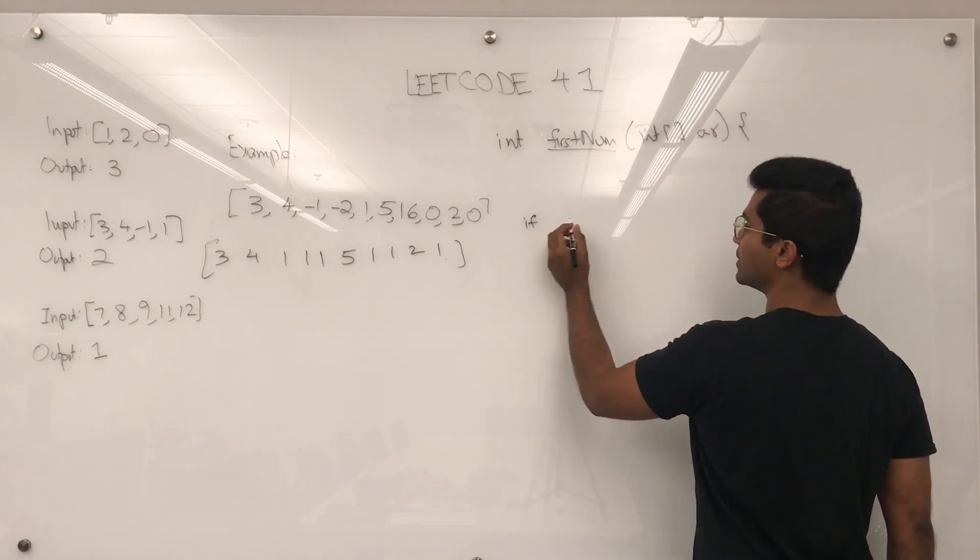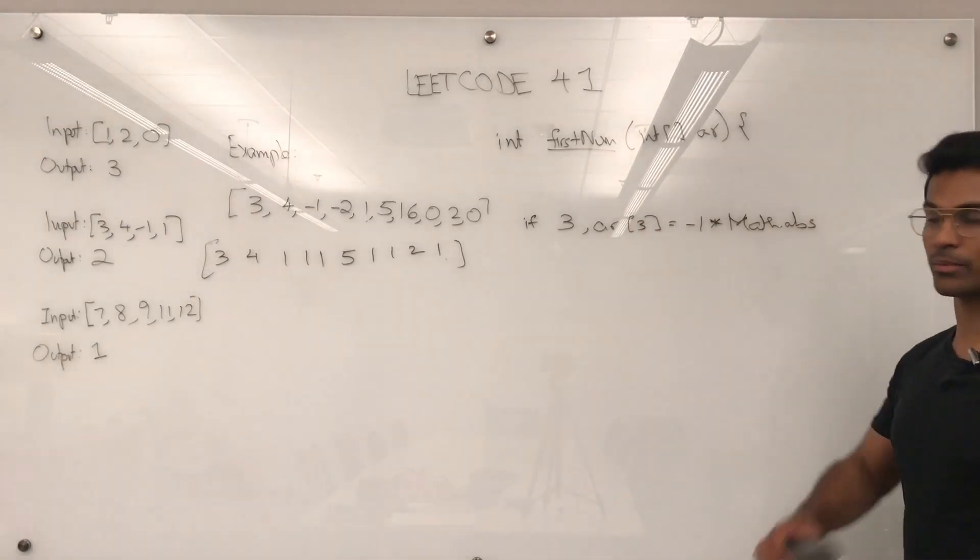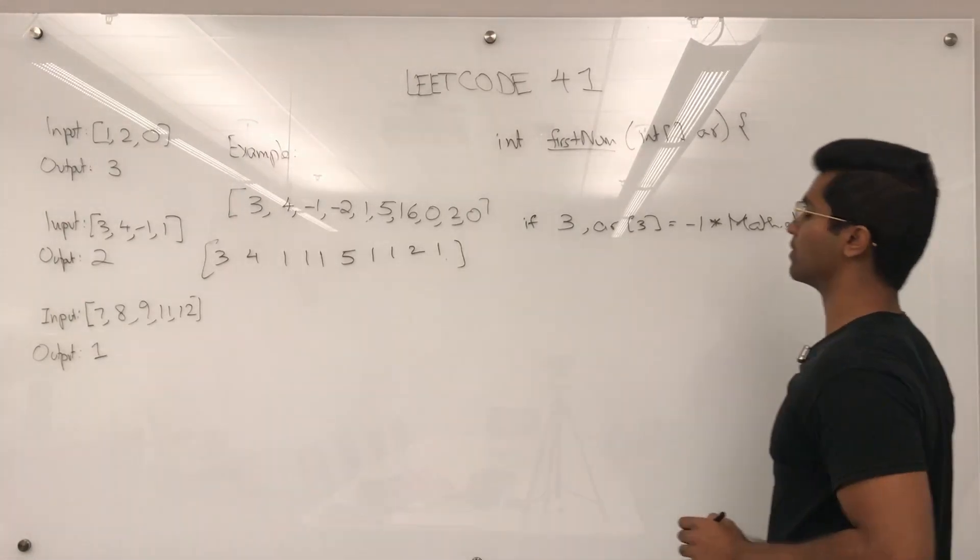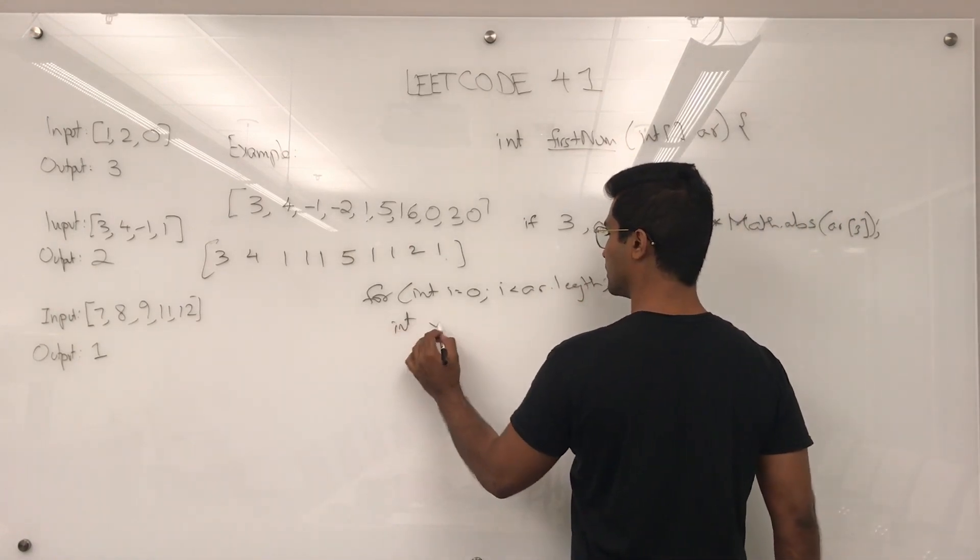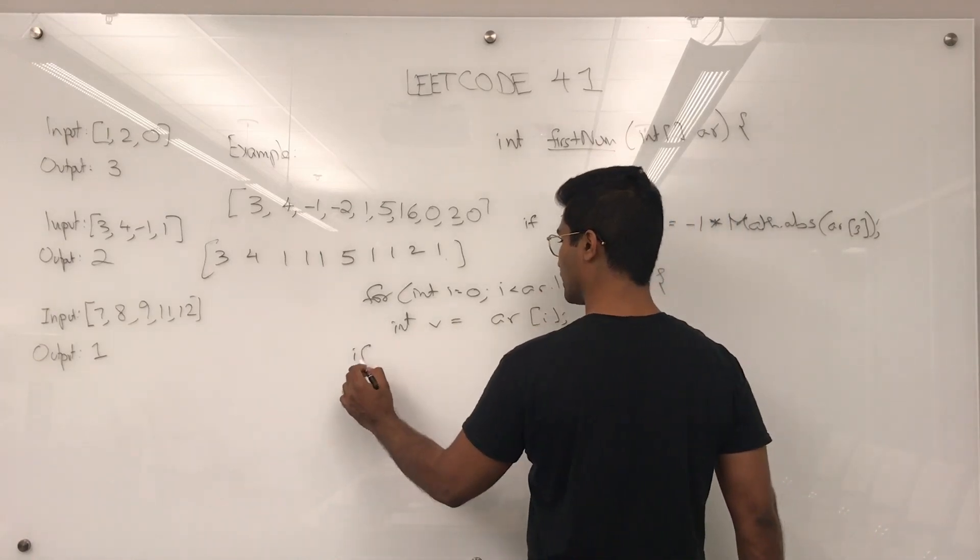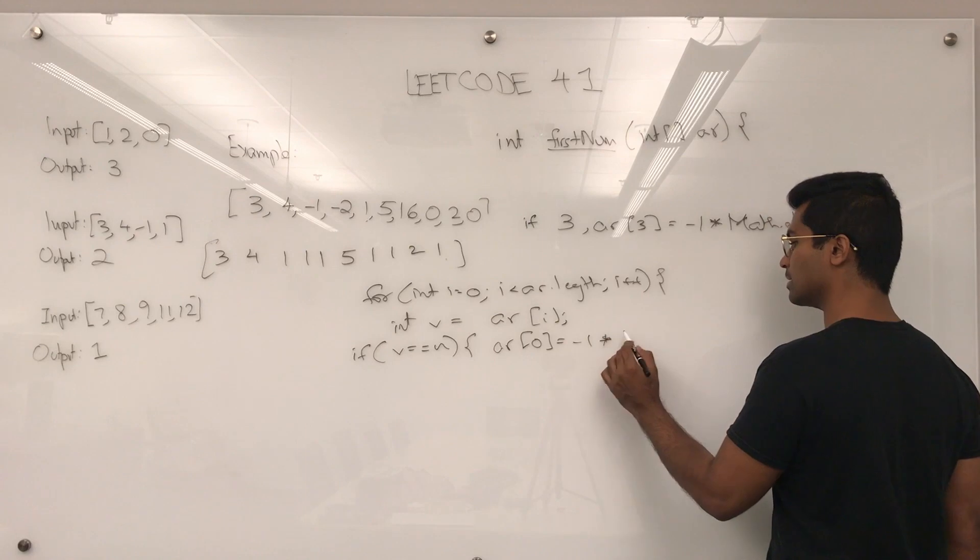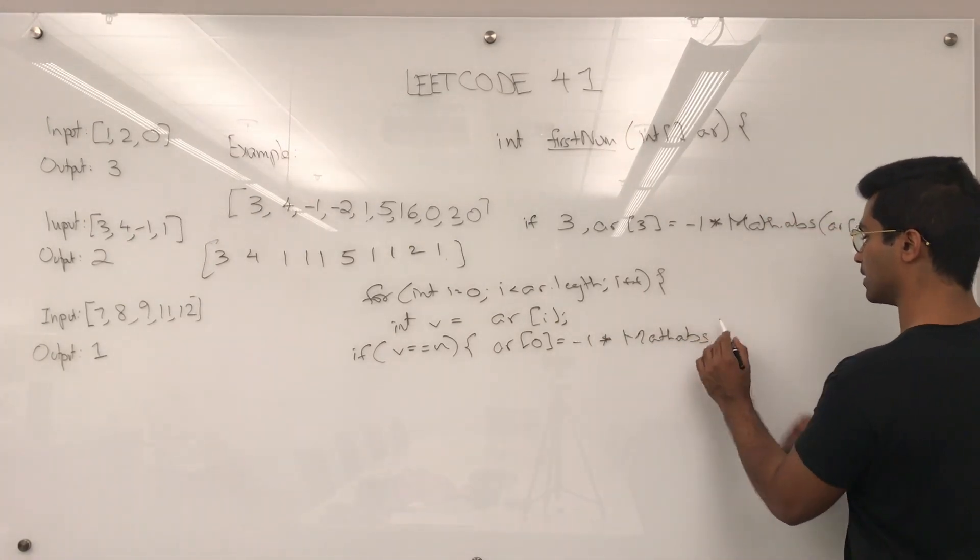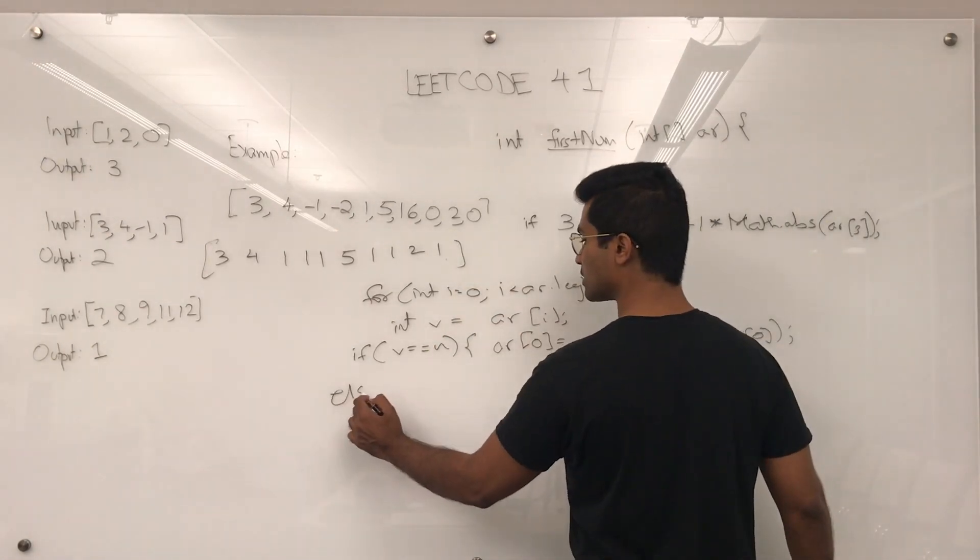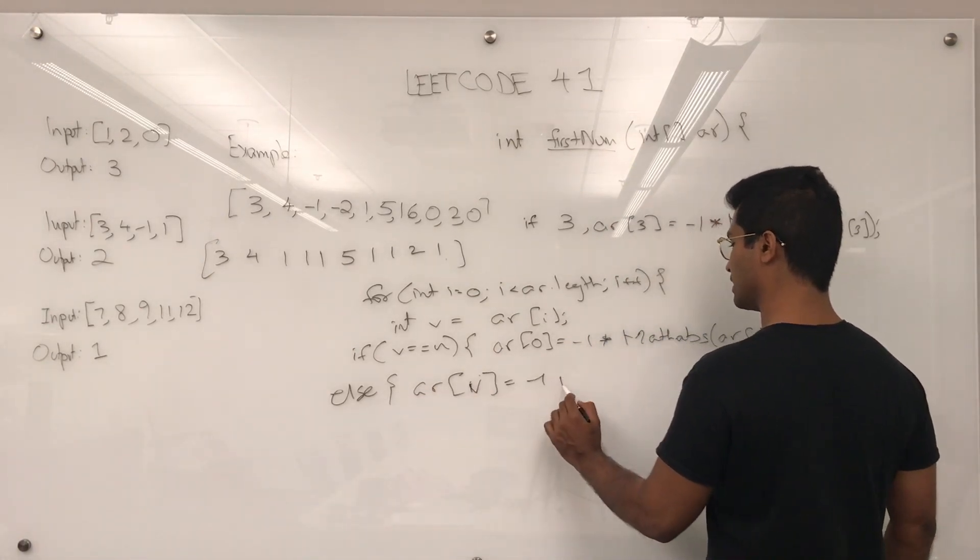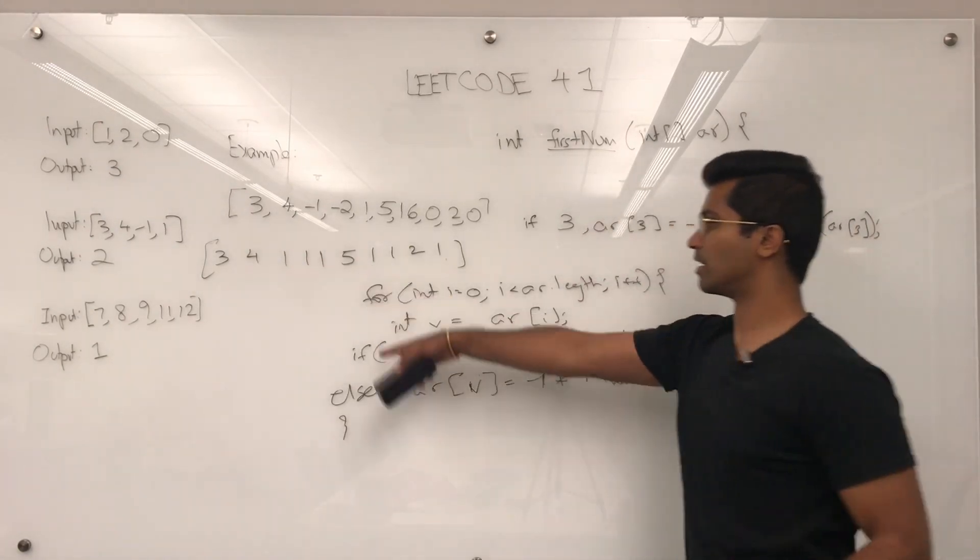Now, what we need to do is if we see 3, then array[3] has to become negative. But we only have to set it negative once. This is our way of saying we're done with using that number. So, for int i equals 0, i is less than array.length, i++, int v equals array[i]. If v equals n, then what we have to do is set array[0] equal to negative 1 times Math.absolute of array[0]. The reason we're setting this equal to 0 is because there's no array[n], it would go out of bounds. Else, array[v] is going to be set to negative 1 times Math.absolute of array[v].